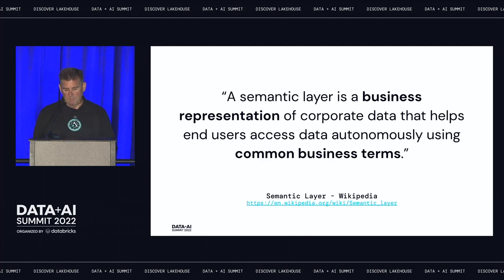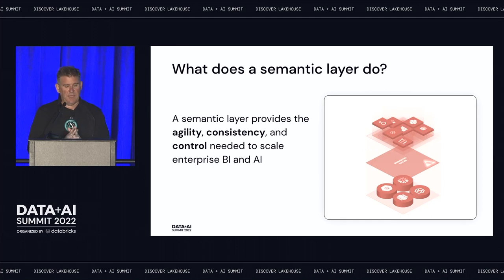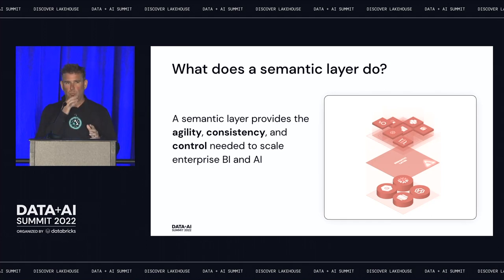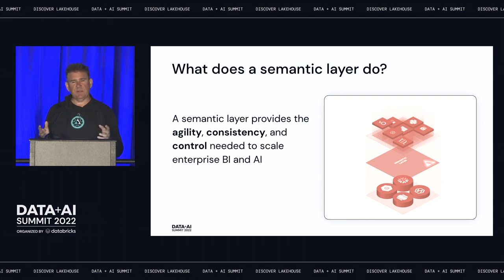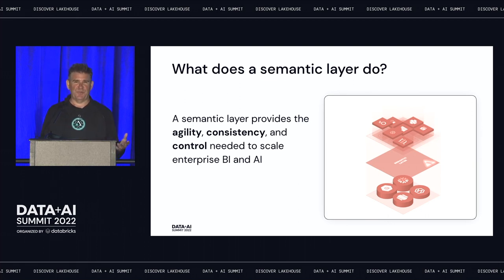That means we've got to speak in terms like revenue, gross margin, month, and quarter instead of dealing with Parquet files and Delta files in a data lake somewhere. So if we know the semantic layer can become that business layer, where does it sit? Semantic layers aren't new — they've been around since Business Objects coined the term 'Business Objects Universe' back in the 80s.